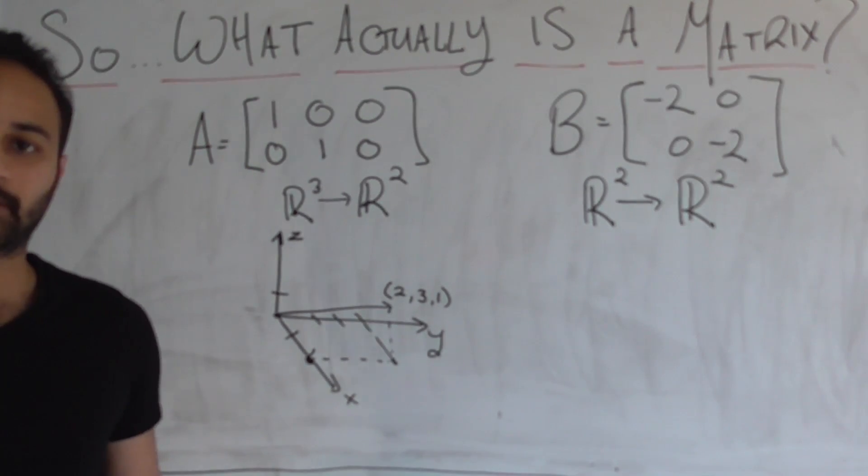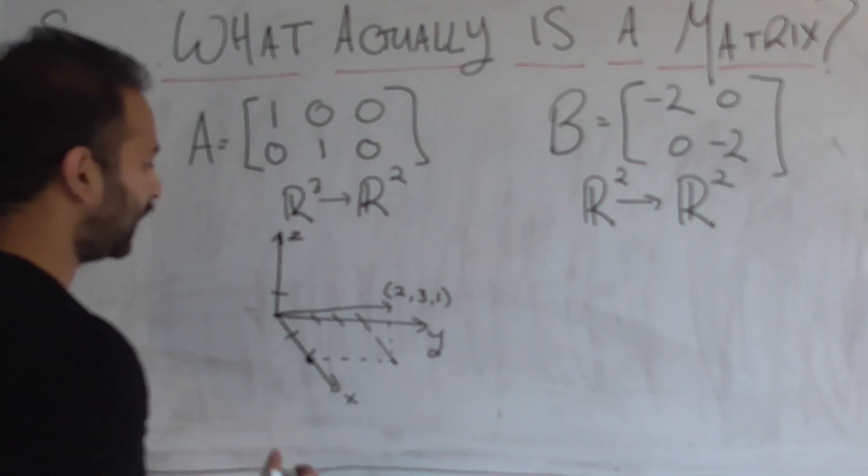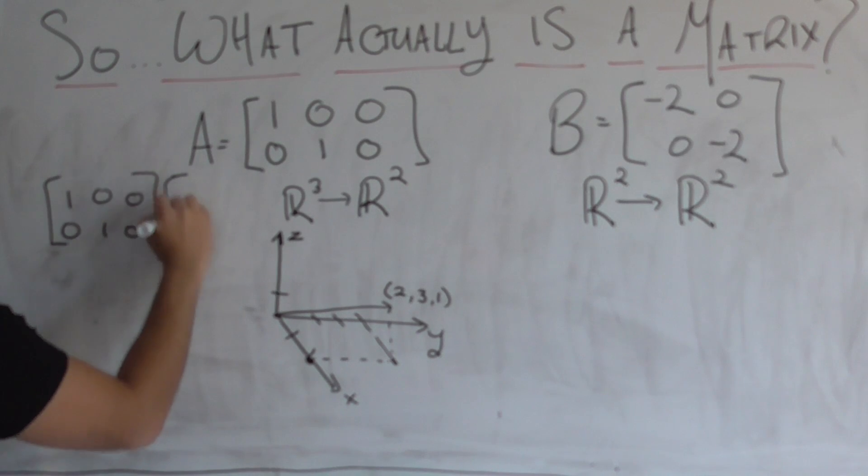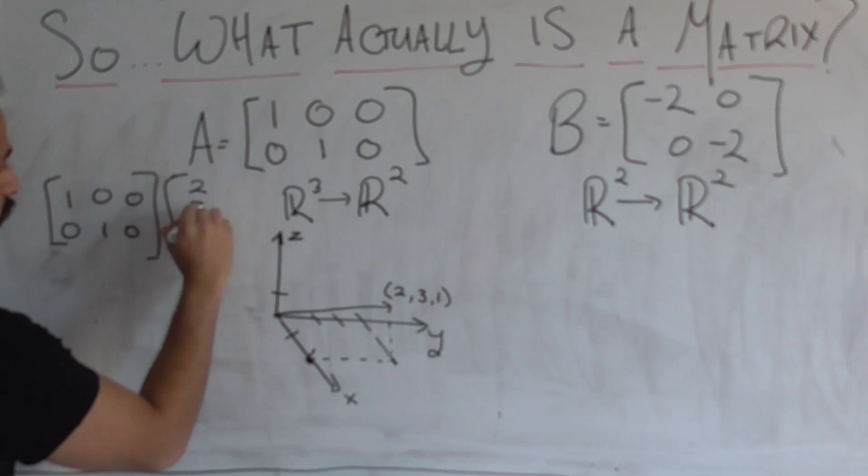What happens when we feed that vector two, three, one into our matrix A? So what's going to happen is, we're going to get one, zero, zero, one, zero, zero. And we're going to get two, three, one.